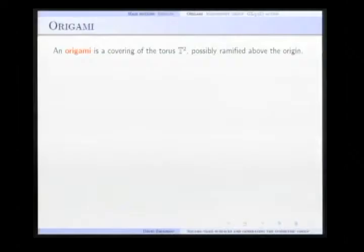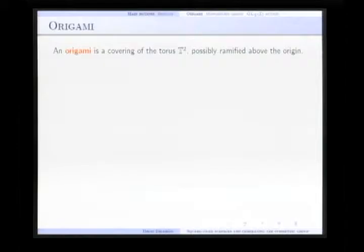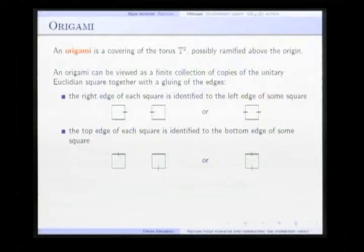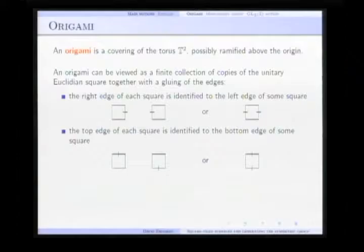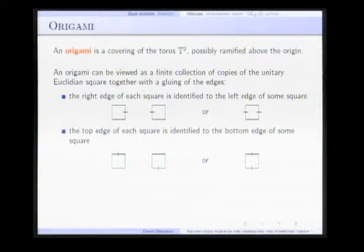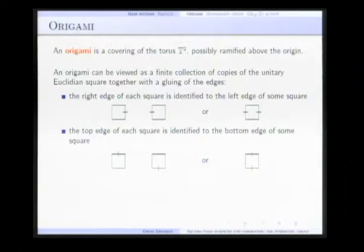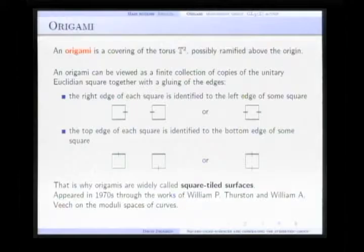Square-tiled surfaces and generating the symmetric group. A square-tiled surface or else an origami is just a covering of the torus, possibly ramified above the origin. We remember that the torus is just a square with two opposite sides glued. If we consider the pre-images of the square for the torus, we get that an origami can be viewed as a finite collection of copies of the unitary Euclidean square that are glued following the rules that the right edge of each square is glued to the left edge of some square, and the top edge of each square is glued to the bottom edge of some square.